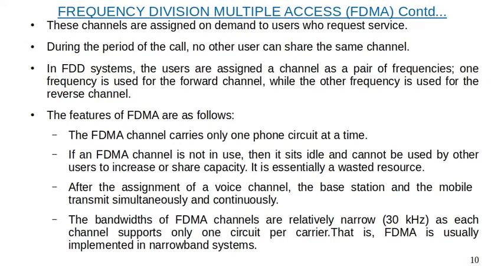After the assignment of a voice channel, the base station and the mobile transmit simultaneously and continuously. The bandwidth of FDMA channels is relatively narrow, as each channel supports only one circuit per carrier. FDMA is usually implemented in narrowband systems, where the channel bandwidth is about 30 kHz. The symbol time of a narrowband signal is large compared to the average delay spread, which implies that inter-symbol interference is low and thus little or no equalization is required in FDMA narrowband systems.